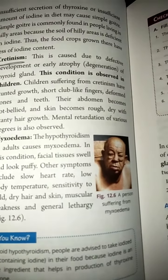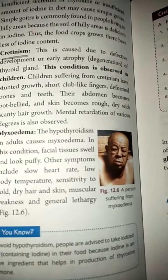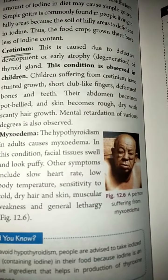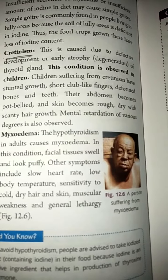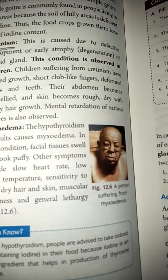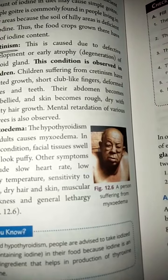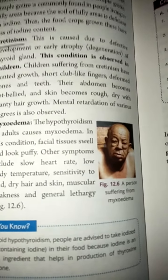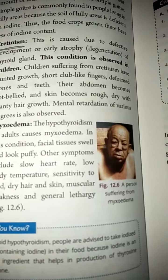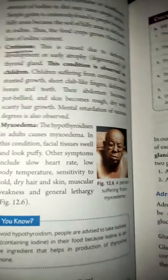In cretinism, the abdomen and belly can be swollen, the skeletal system is affected, the skin is rough and dry, hair growth is very limited, and the heart is very weak.